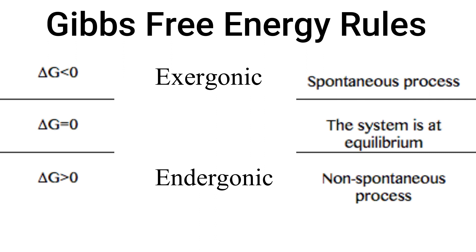Therefore, whenever Gibbs free energy is below zero, it is a spontaneous reaction and is exergonic. When it is above zero, the reaction is not spontaneous and is endergonic. When Gibbs free energy is zero, then the reaction is at equilibrium.